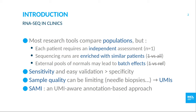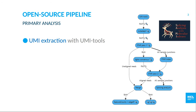To address all of these challenges, we developed SAMI, a UMI-aware annotation-based pipeline. The primary analysis is quite simple, as shown on this chart. UMIs are handled with UMI-tools. Alignment is performed with STAR in full two-pass mode, because splice junctions must be identified with high accuracy and homogeneity.